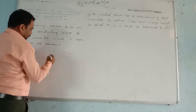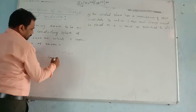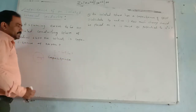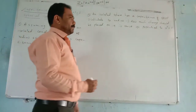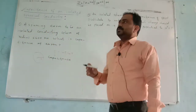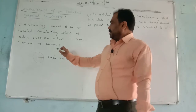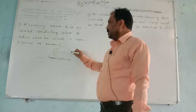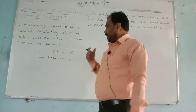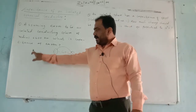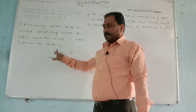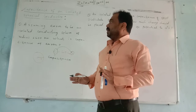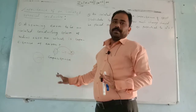C stands for capacitance. Capacitance equals 4πε₀ into r. According to this concept, we conclude that capacitance is directly proportional to r. It means if the radius of a spherical conductor increases, then the capacitance also increases. This concept we have seen already.